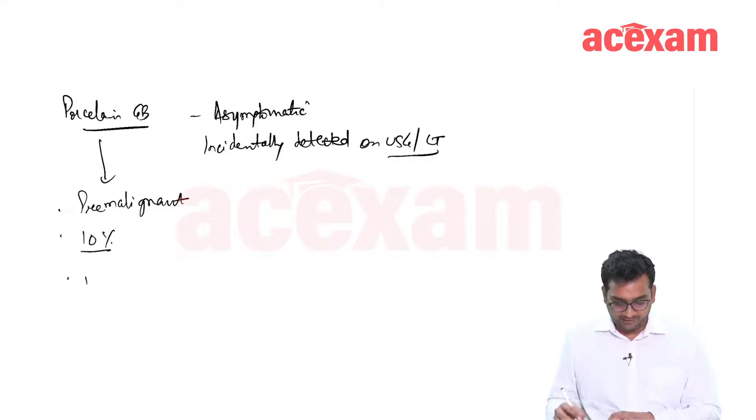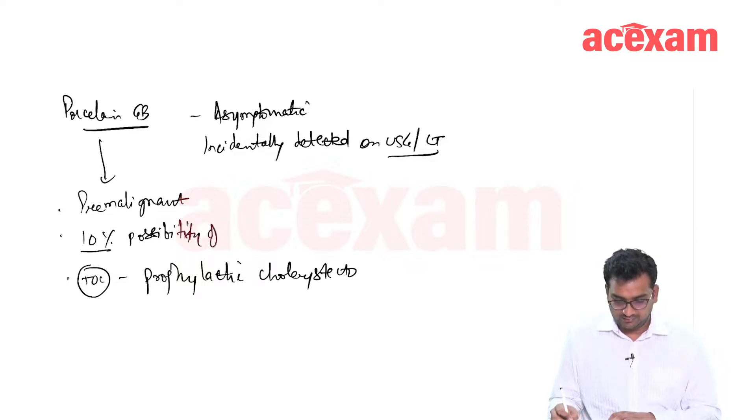The treatment of choice is a prophylactic cholecystectomy. We should do a cholecystectomy in these patients as there is a 10 percent possibility of malignancy.